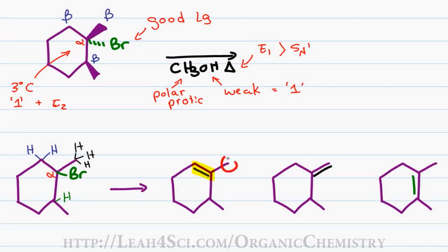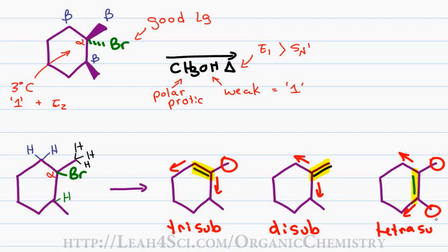For our first product we have one, two and three carbon groups coming off of the pi bond, giving me a tri-substituted alkene. For the second product we have one, two carbon chains coming off of that pi bond, giving me a disubstituted product. And finally our third product has one, two, three, four carbon chains coming directly off that pi bond, giving me a tetra-substituted product.